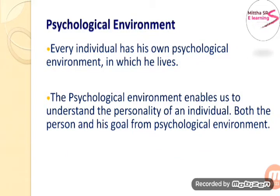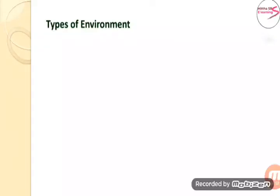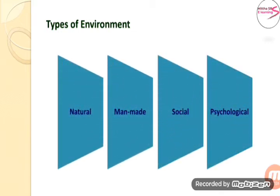The next type is psychological environment. Every individual has his own psychological environment in which he lives. The psychological environment enables us to understand the personality of an individual. Both the person and his goals form the psychological environment. So we have studied four types of environment: natural environment, man-made environment, social environment, and psychological environment.